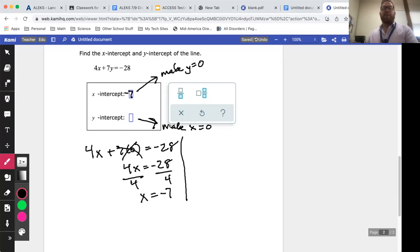And then for your Y intercept, we're going to make X equal to zero. So it would be four times zero plus 7y = -28. That goes away and you get 7y = -28. Divide both sides by seven and get y = -4.